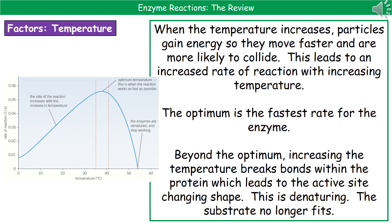The first factor is temperature. The typical shape of the graph starts off very low at low temperatures, then the rate of reaction increases up to a certain point before dropping off quite rapidly. As we initially increase the temperature, the rate of reaction also increases. The reason is that you're giving the particles — the enzyme, substrate, etc. — energy, so they move around faster and are more likely to collide. The only way a reaction can occur is if the enzyme and substrate actually collide and join, so moving faster means they're more likely to collide and the rate of reaction increases.